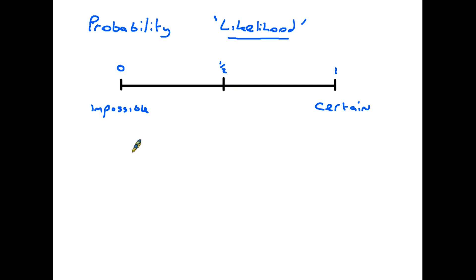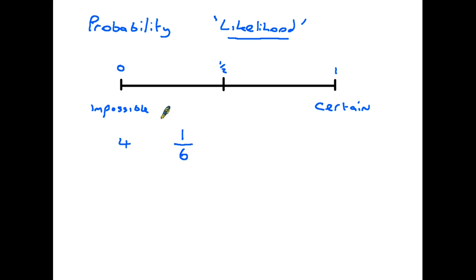Consider instead that we're going to roll a dice. A dice has six sides, each with a different number. If we look at the probability of rolling a four: there are six sides, so there are six different possible outcomes. The number four only appears once on that dice, so out of the six possible outcomes, one of them is a four. Therefore there is a one in six chance — as a fraction, it is one sixth.